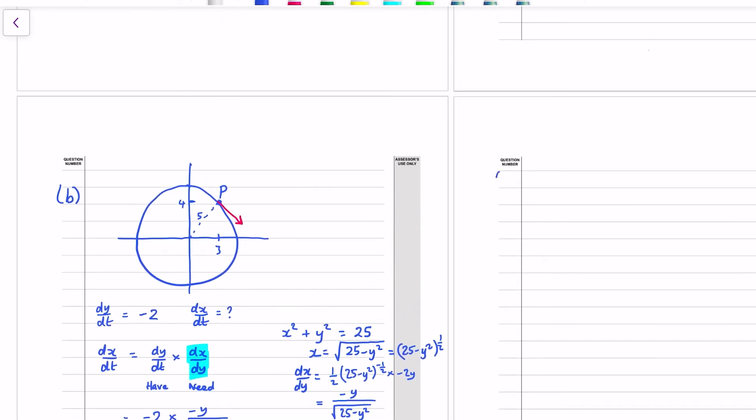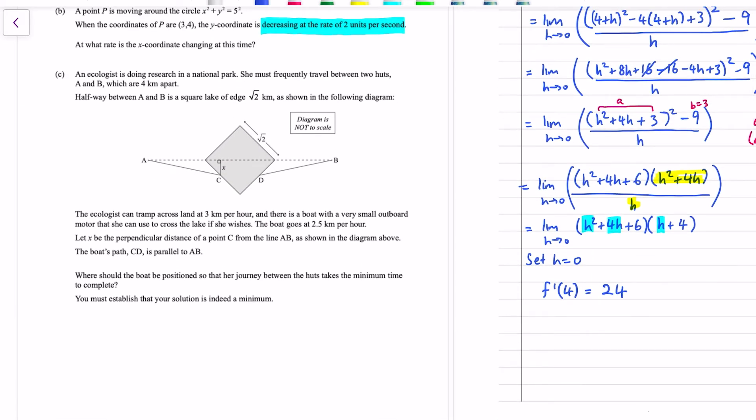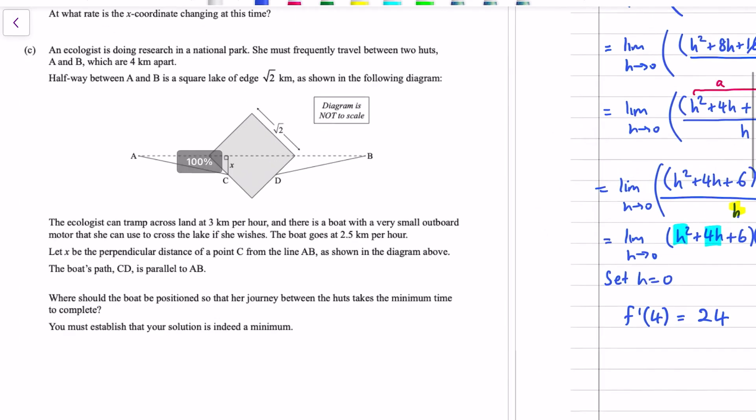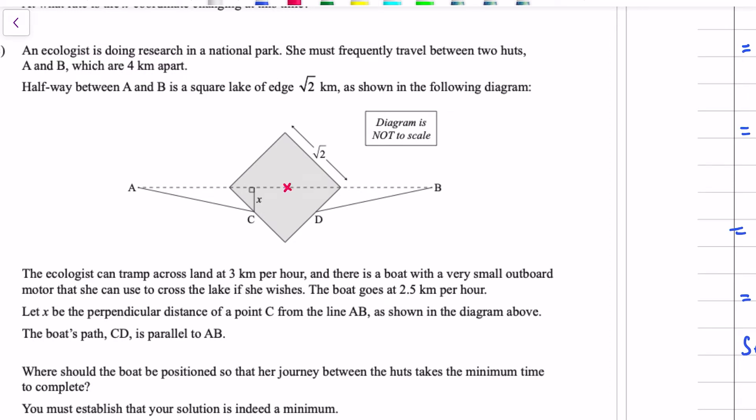Part C. An ecologist is doing research in a national park, she must frequently travel between two huts, A and B, which are 4km apart. So the first step tells us if we've got the centre of the lake here, let's call this 0, 0 for it, then A is at the point negative 2, and B is at the point 2, if they're 4km apart. Halfway between A and B is a square lake, of course there is, of edge root 2 km. So if all of the sides are root 2 long, then this is a 1, 1 square root 2 triangle, a diagonal bisects square, so this angle must be 45 degrees, and therefore 1, 1, root 2.